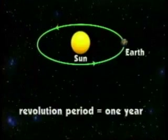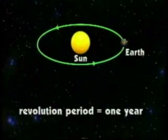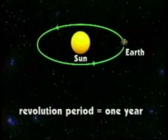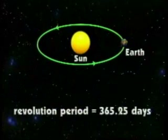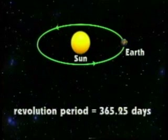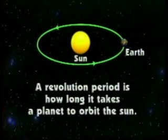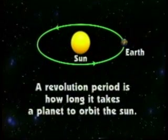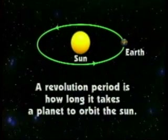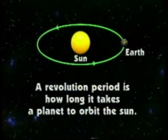The Earth's revolution period is one Earth year, or 365.25 days. A revolution period is how long it takes a planet to orbit the sun.